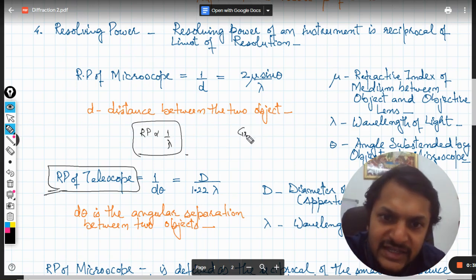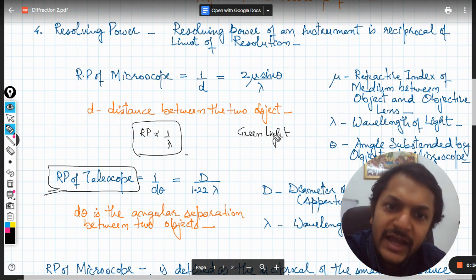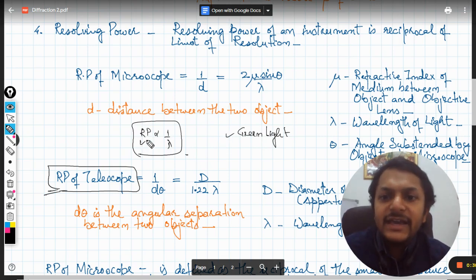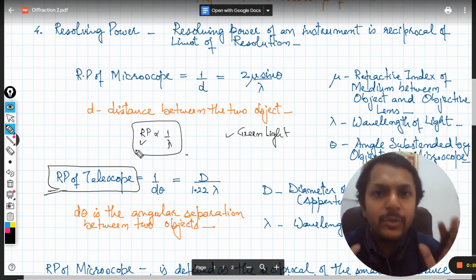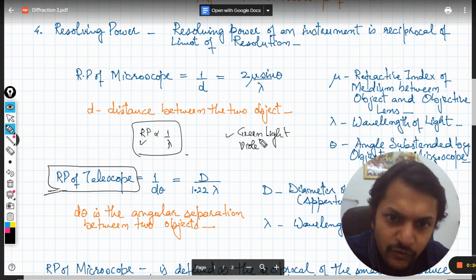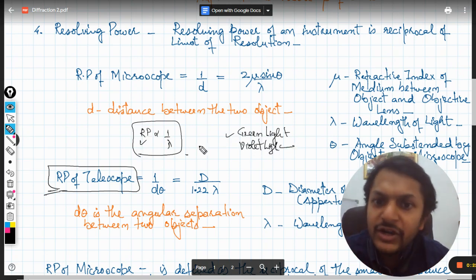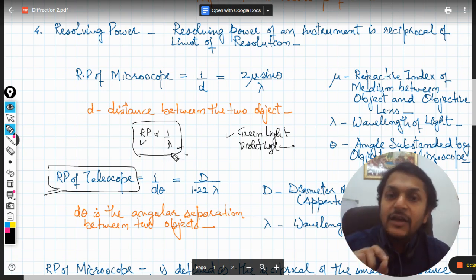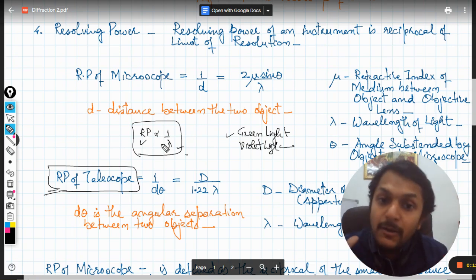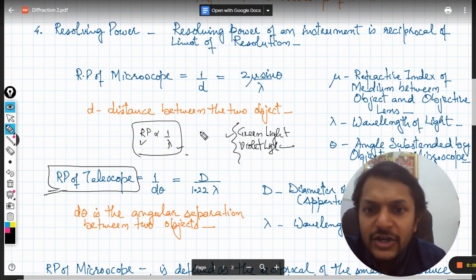Now in the first case they are using green light, like they are using a green filter, so the light coming from the star becomes green. So that green light is able to produce a proper resolution, that is fine. But now if you shift to violet light, you are now reducing the wavelength. So you are increasing the resolving power of your instrument. It means that stars will still be resolved very, very properly.